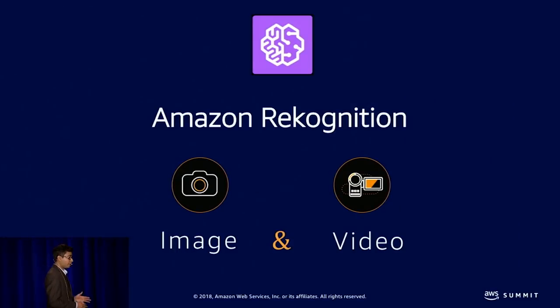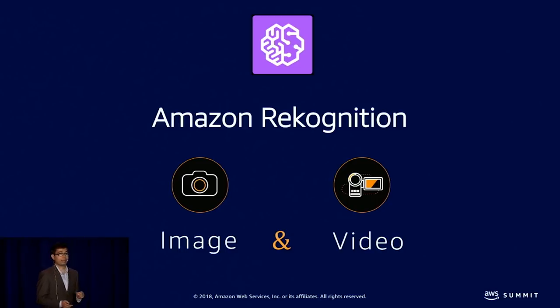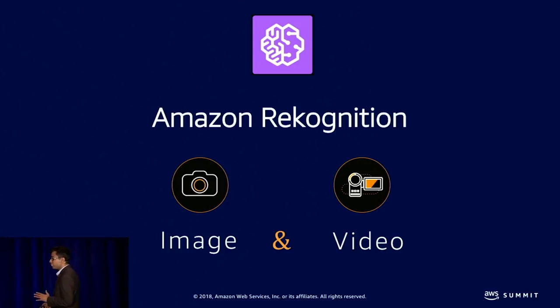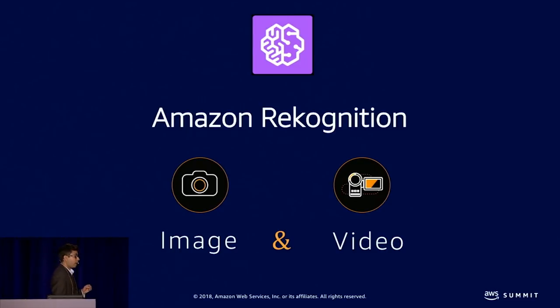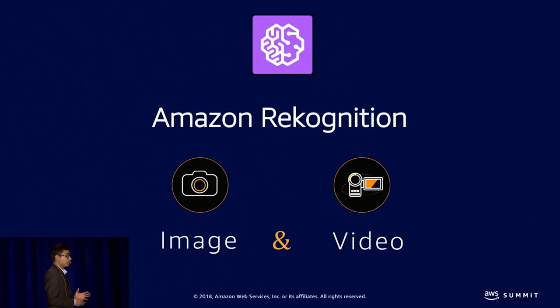So let's get started. Amazon Rekognition is a deep learning-based image and video analysis service. With it, you can easily add integrated visual analysis to all your image or video assets. With Amazon Rekognition Image, you can search, verify, and organize millions of images in a single day. With video, you also get time and motion context, and you can even process stored video or live videos — supporting gigabytes of content.